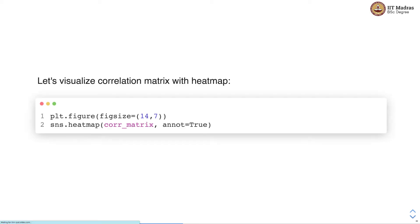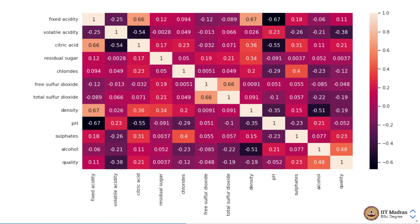We can visualize the correlation matrix with a heat map. There is a heat map function in the Seaborn library that we can use for that purpose. Here you can see all correlation coefficients at once in the form of a heat map — a symmetric matrix with features on both the y-axis and the x-axis, where each cell shows the correlation between the corresponding features. For example, fixed acidity and citric acid are strongly correlated with a correlation coefficient of 0.66. The color coding is represented on the color bar on the side.